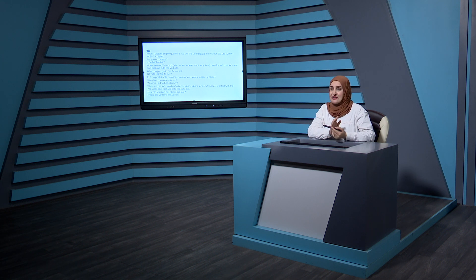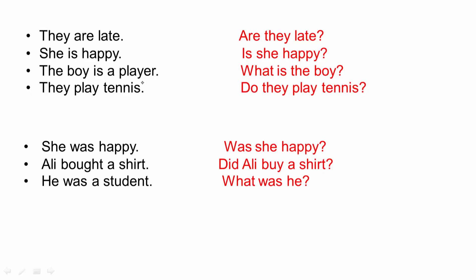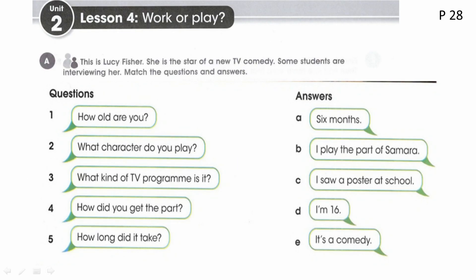Use 'verb to be' with adjectives, nouns, or adverbs. When you have a main verb, use 'did,' 'do,' or 'does' according to tense. Examples: 'They are late' → 'Are they late?' — auxiliary before subject. 'She is happy' → 'Is she happy?' 'The boy is a player' → 'What is the boy?' 'They play tennis' → 'Do they play tennis?' — 'do' is used because 'play' is the main verb. Past: 'She was happy' → 'Was she happy?' 'Ali bought a shirt' → 'Did Ali buy a shirt?' — after 'did,' use bare infinitive. 'He was a student' → 'What was he?'